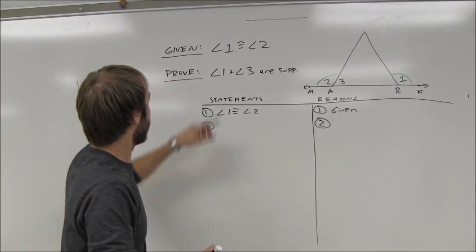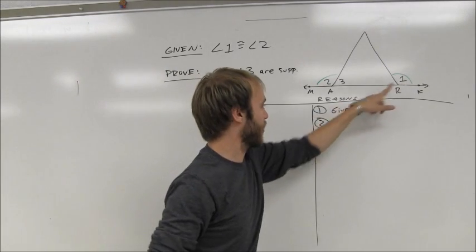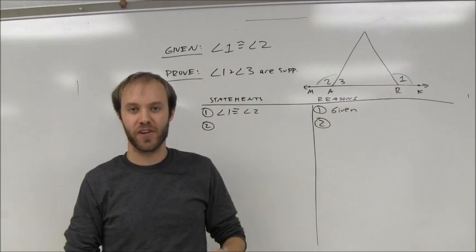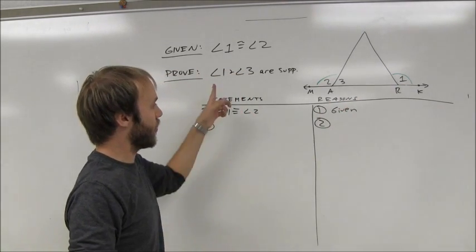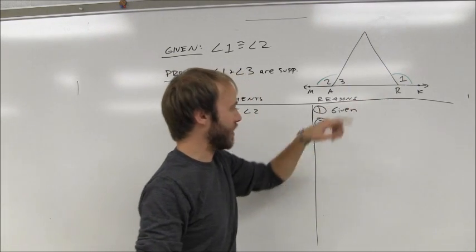Take a look at this proof. This proof tells me that angle 1 and 2 are congruent. You can see that I've marked those two angles congruent. I'm trying to show that angle 1 and angle 3 are supplementary.